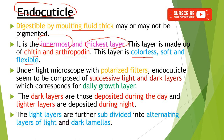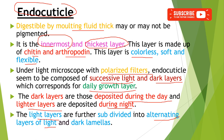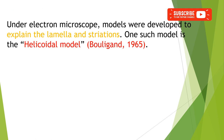When we look at the endocuticle under a light microscope with polarized filters, it appears to be composed of successive light and dark layers corresponding to daily growth. Dark layers are deposited mainly during the daytime and light layers at night. These light layers are divided into alternating light and dark lamellae. Many models were developed to explain this lamellation and striation, one of which is the helicoidal model proposed by Bolligan in 1965.